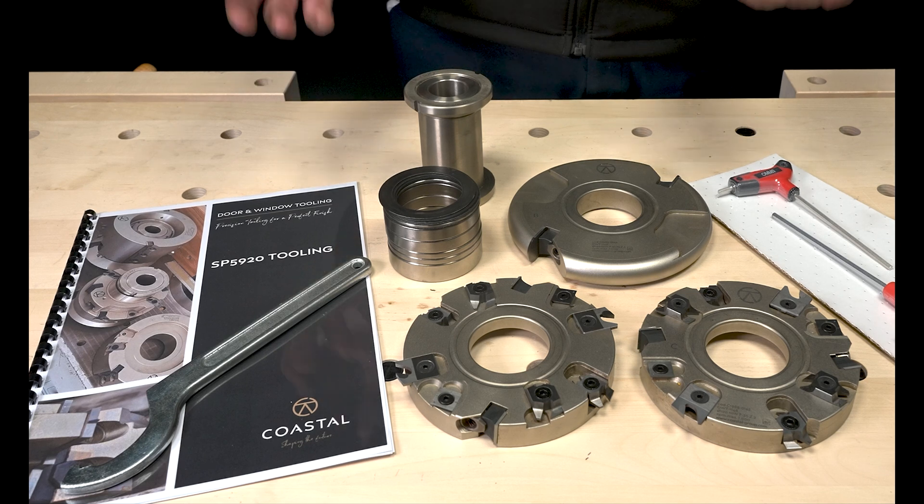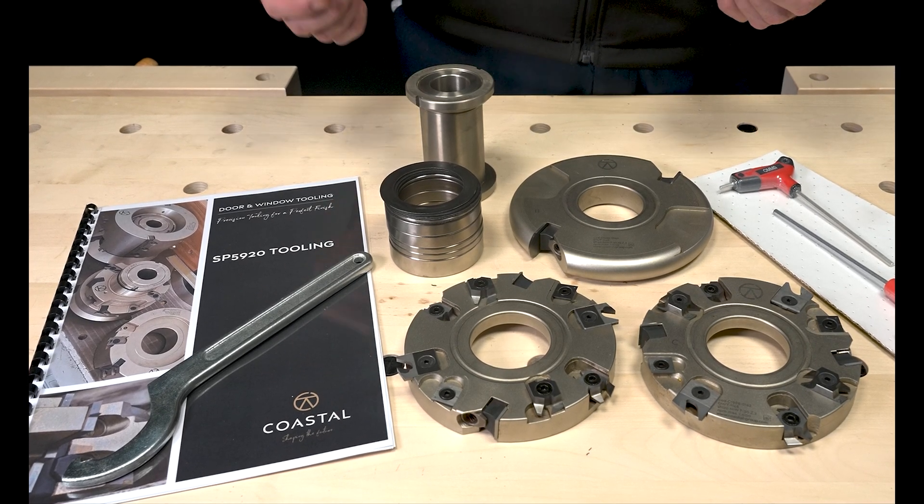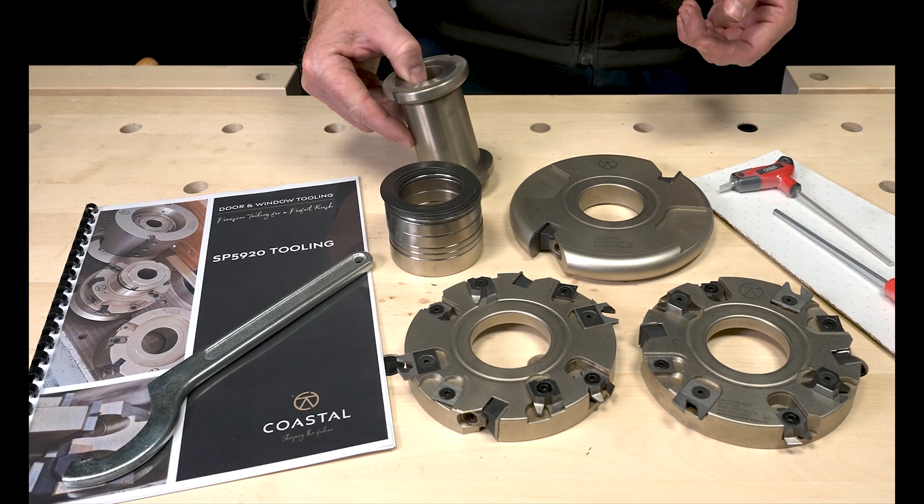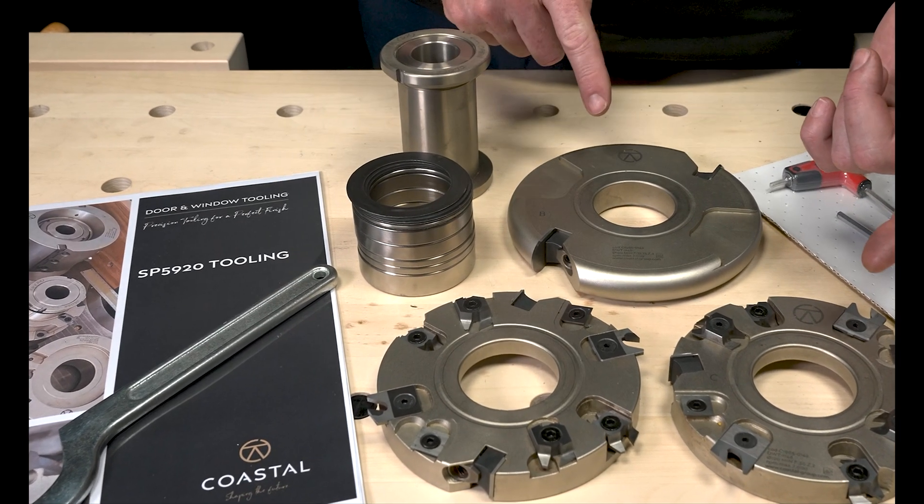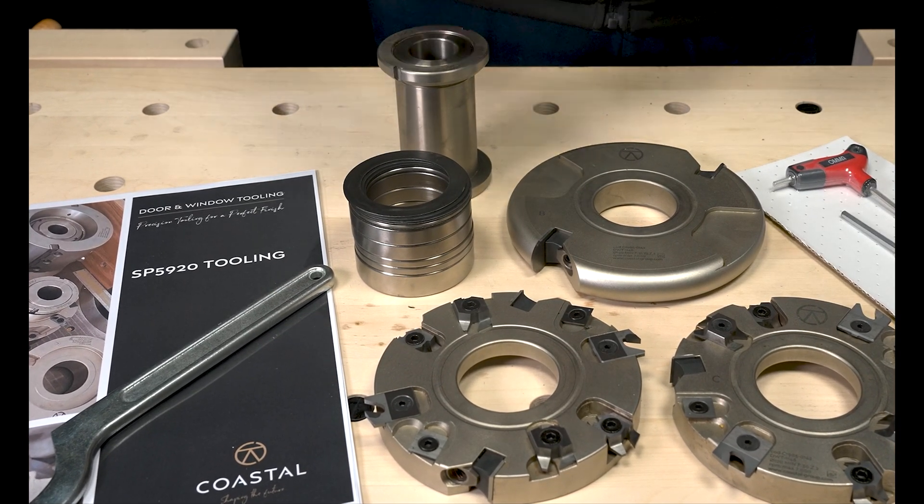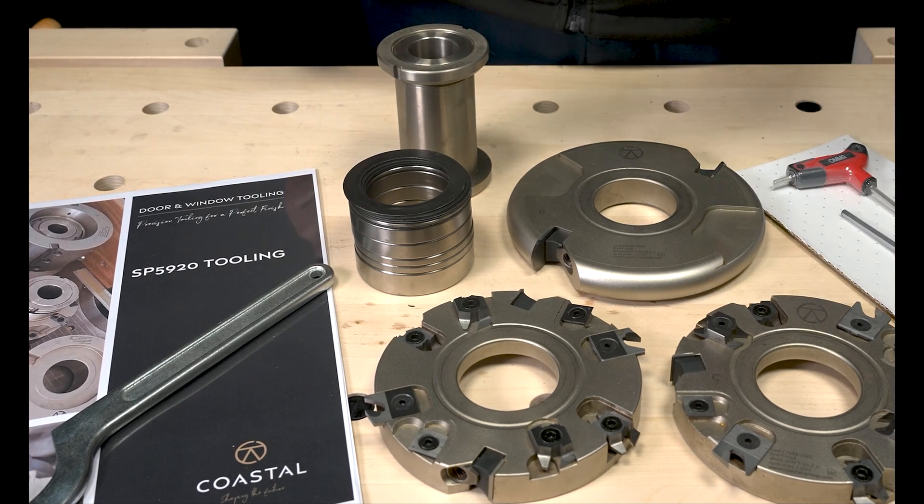So our stock SP5920 tool, which will do a 57mm and a 45mm casement, consists of an arbor available in 30mm or an inch and a quarter (31.75mm), element A, element C, element B, and the various spacers, C-spanner for the arbor, and allen keys for the knives and a manual.